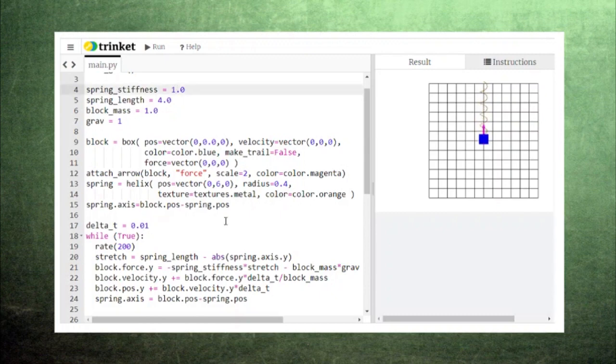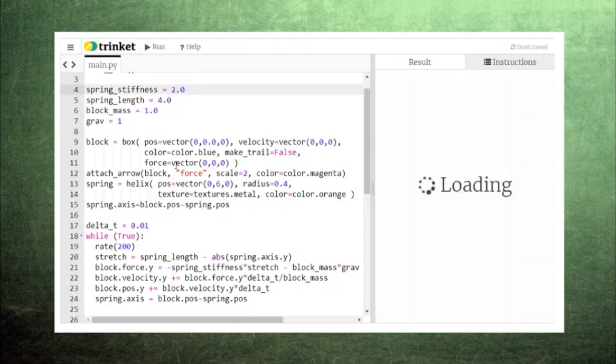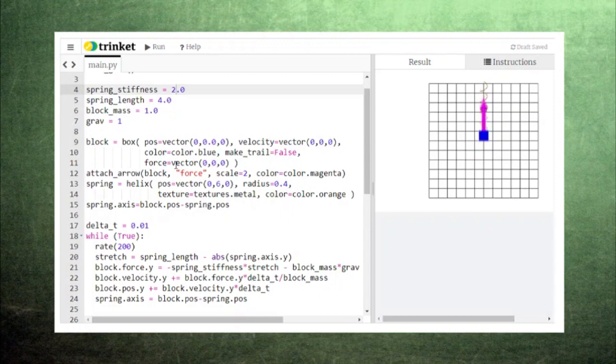If we change the stiffness of the spring or the mass of the block, we can watch the spring oscillate with a different frequency. If you conduct this experiment in class, you can adjust these variables to match the frequency of your spring.